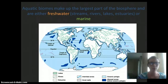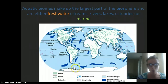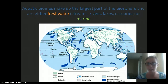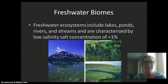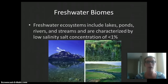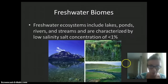Freshwater biomes are going to be the streams, rivers, lakes, or estuaries, and then marine will be our ocean area. Of course our ocean and the marine biome would be the largest in our world. Freshwater biomes include lakes, ponds, rivers, and streams and they're characterized by low salinity — a low salt concentration of less than one percent dissolved salt in the water.